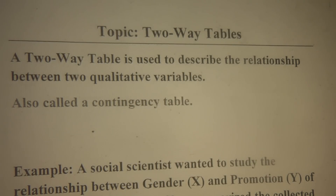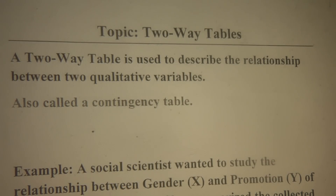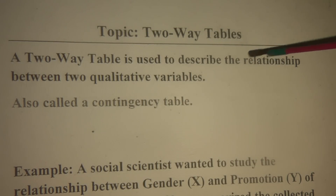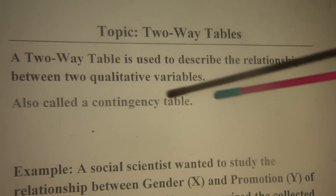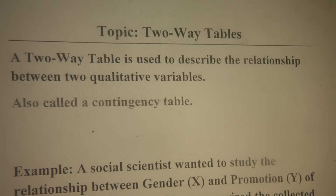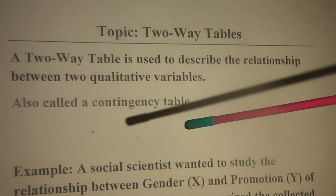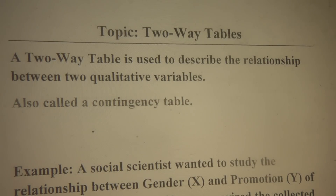This topic is to introduce you to the two-way table. A two-way table is used to describe the relationship between two qualitative variables. A two-way table is sometimes also called a contingency table, or some people call it a cross-tabulation.